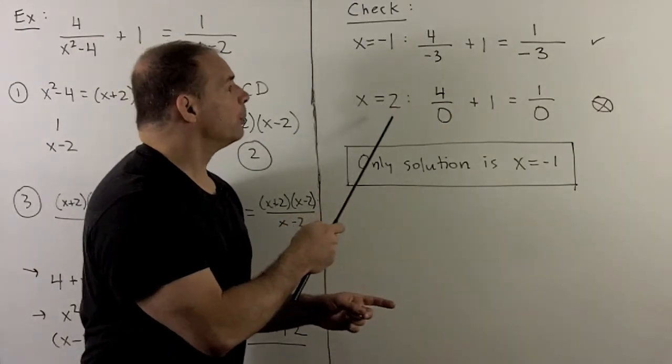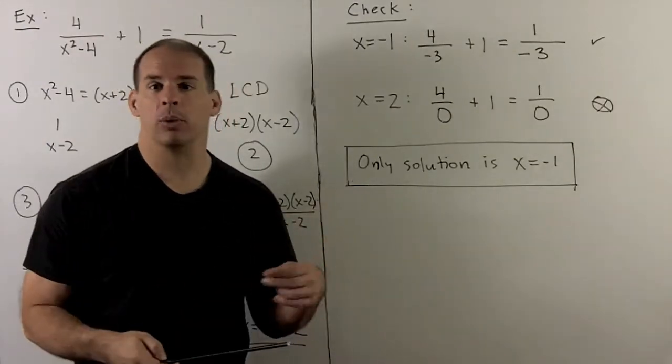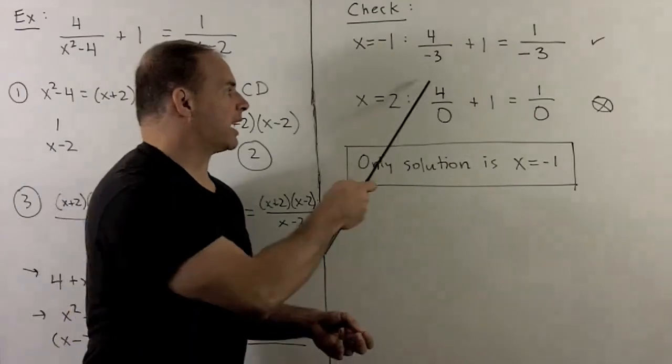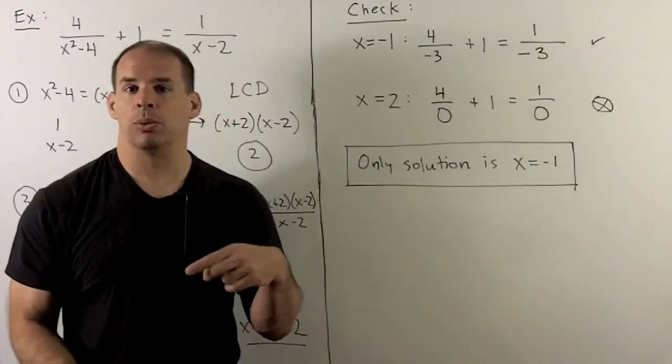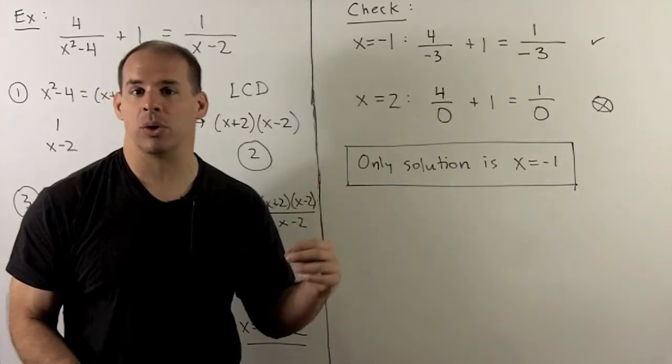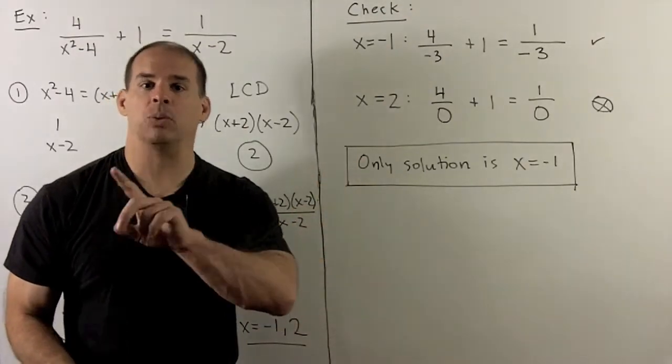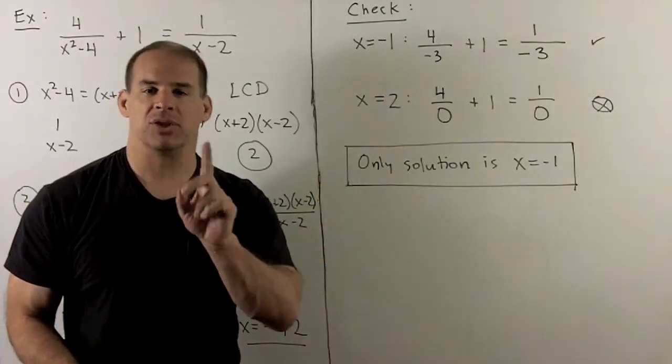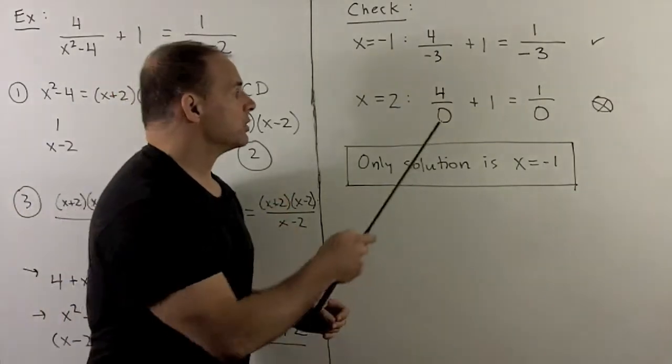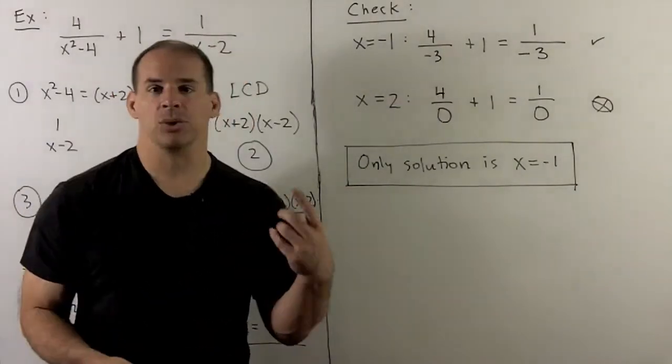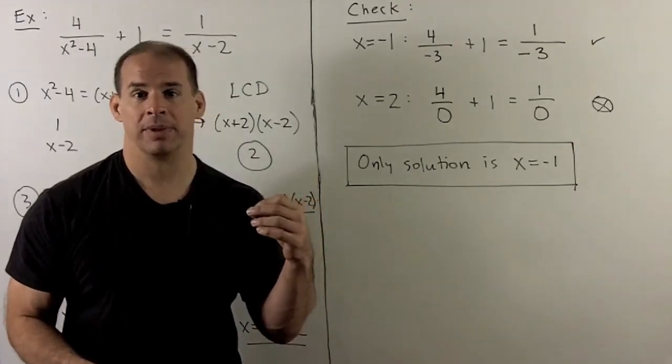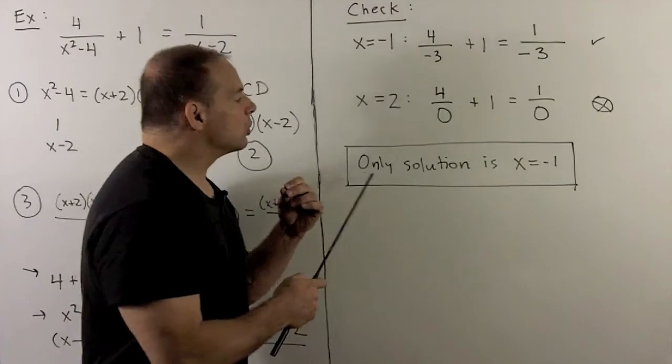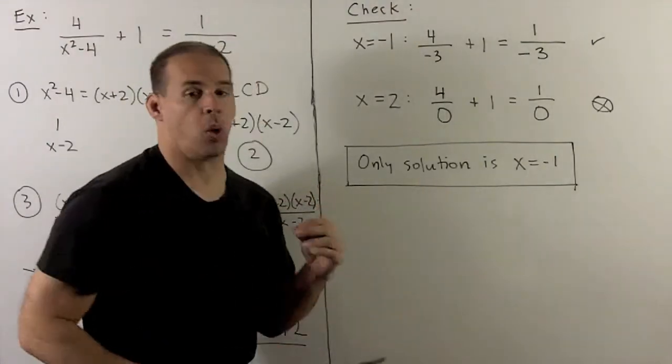When I go to x equal to 2, x squared minus 4, when we put in a 2 is 0, so I'm dividing by 0 here. On the other side, x minus 2, when we put in 2 is 0, so we're dividing by 0 on the other side. We only need one term to fail to make it so we don't have a solution. So 2, while it's a solution to the polynomial, it's not a solution to the original equation. That means our only solution is x equal to minus 1.